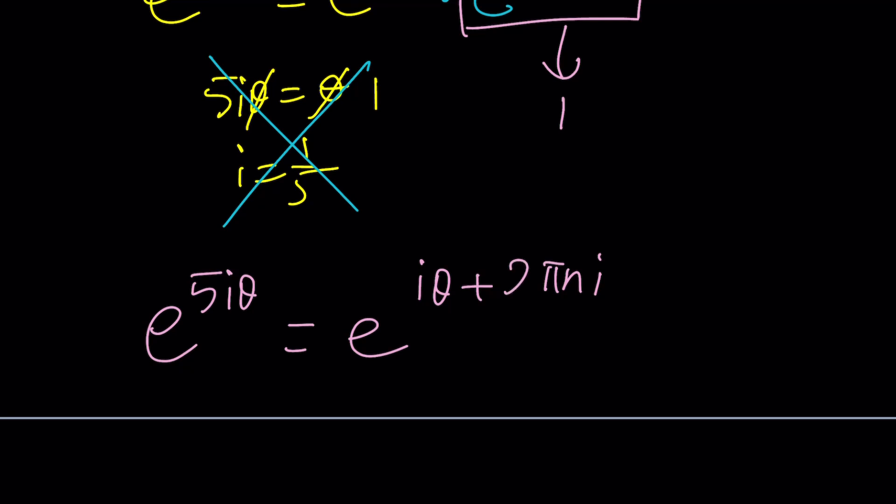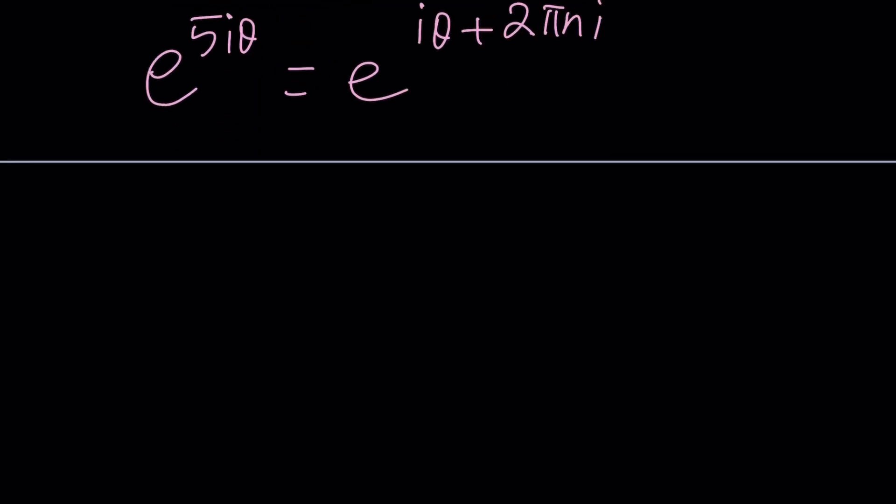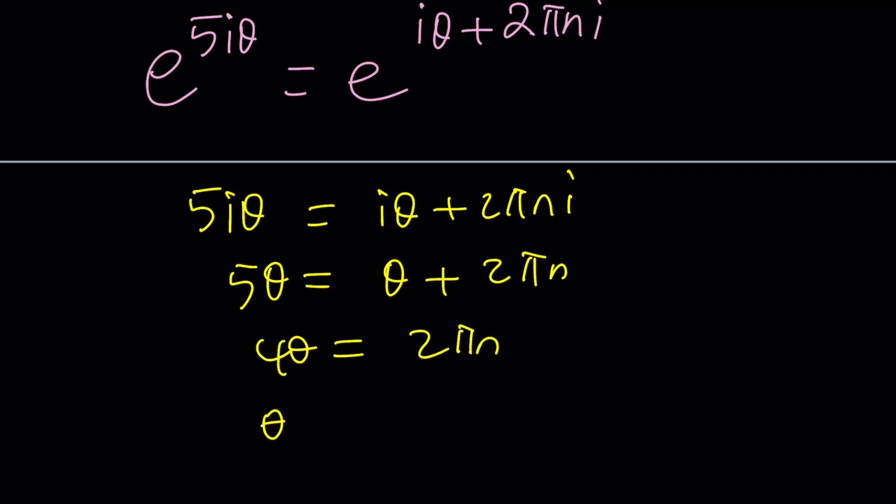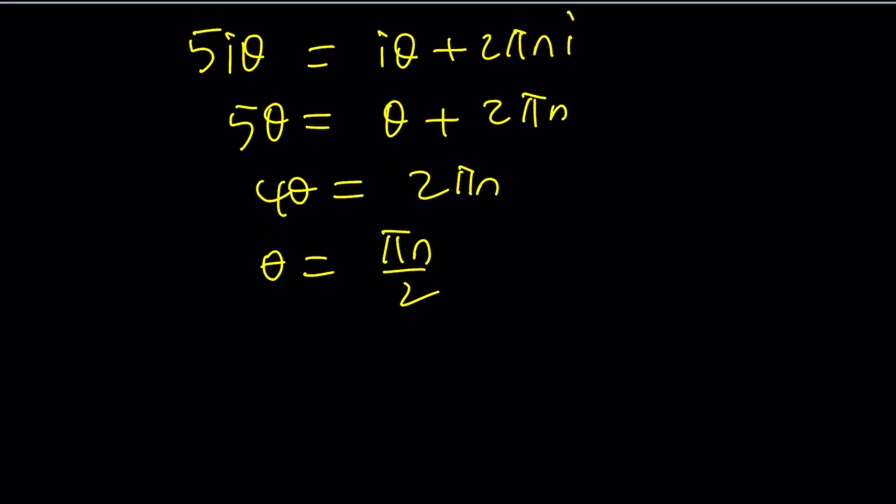And then natural log both sides to get rid of the e. We like Euler. We love Euler's number. We don't want to get rid of Euler. We want to get rid of the e in this equation. And that's going to give us 5i theta equals i theta plus 2 pi n i. And then you can divide everything by i. That gives you 5 theta equals theta plus 2 pi n. That gives you 4 theta equals 2 pi n. Theta equals pi n over 2. Does that look familiar? n times pi over 2. Multiples of pi over 2, right?